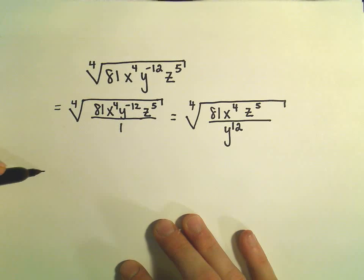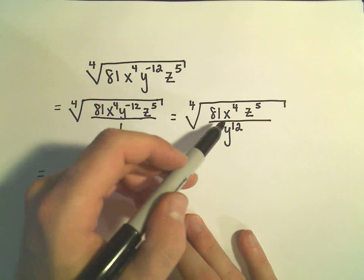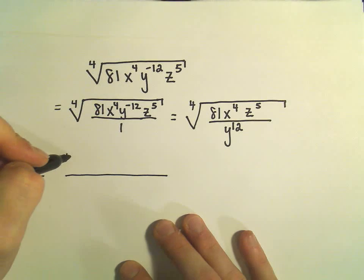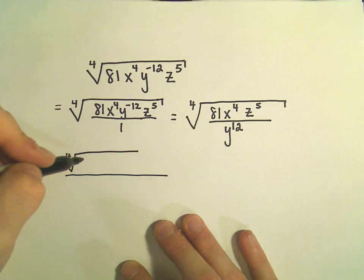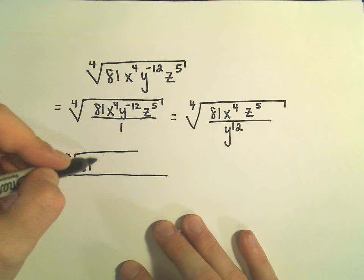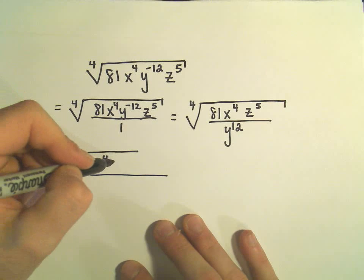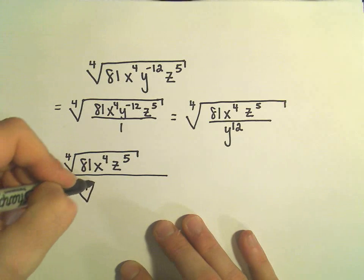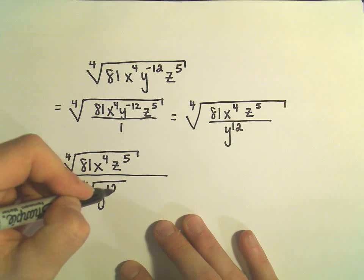Okay, so equivalently, if you have a fraction and a radical, you can break up the fraction. So this is equivalent to having the fourth root of 81x to the fourth z to the fifth, over the fourth root of y to the twelfth.